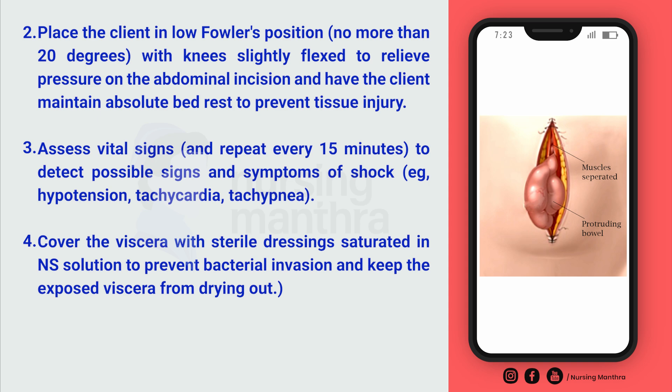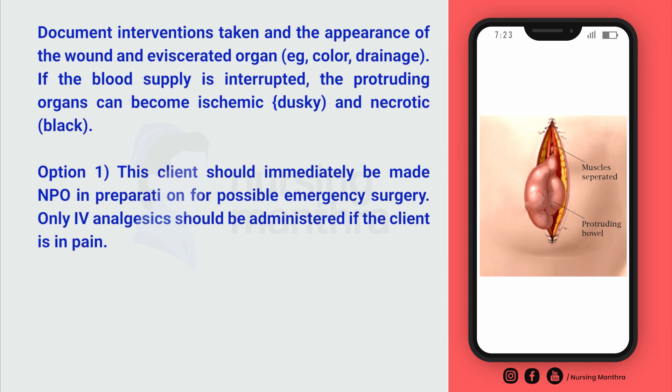Cover the viscera with sterile dressing saturated in normal saline solution to prevent bacterial invasion and to keep the exposed viscera from drying out. Document all interventions taken and the appearance of the wound — including the color of the eviscerated organ, any drainage, and signs of ischemia such as a dusky color or necrosis appearing as a blackish discoloration of the protruded organ.